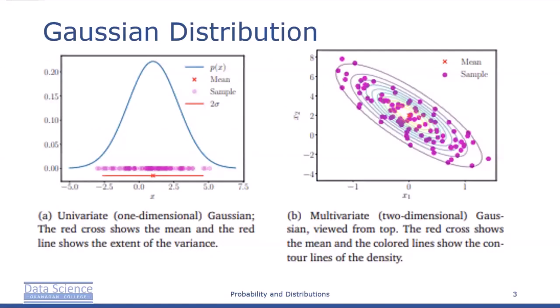The figure here shows the univariate Gaussian and the bivariate Gaussian with corresponding samples. On the left, we see the traditional bell curve for the univariate Gaussian distribution. On the right, we see a multivariate Gaussian looking at it from the top. The red cross shows the mean and colored lines show the contour lines of the density.